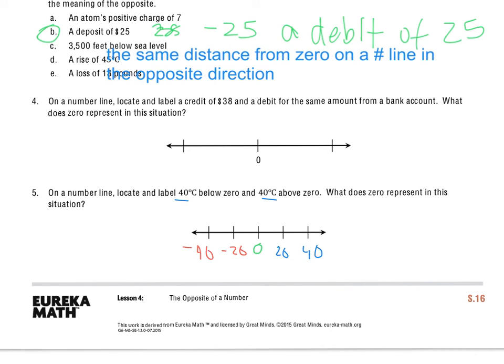So I'll label my first number, and that's 40 below zero. And then this one's going to be 40 degrees above. So the question now states, what does zero represent in this situation? And zero equals zero degrees Celsius because we're talking about the temperature here.